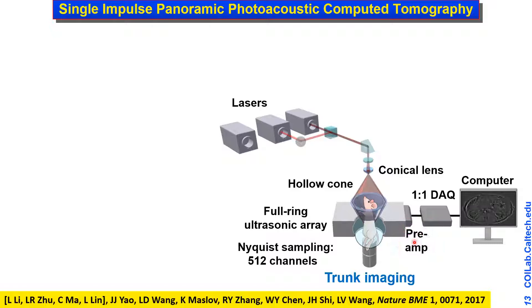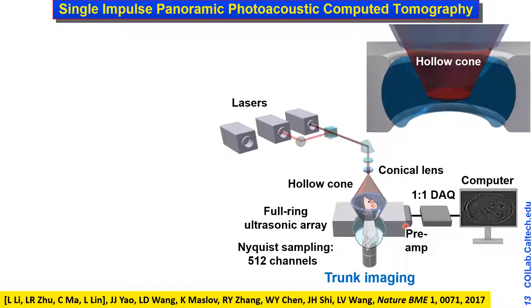As soon as sound is converted to electrical signals, we preamplify to minimize noise pickup and maximize SNR. With one-to-one data acquisition and a single laser shot, we acquire a 2D image within a few microseconds — one of the fastest imaging modalities available. The imaging acquisition time is limited by the acoustic transit time across the field of view. For brain imaging the system is reconfigured using a diffuser to generate a solid beam, which is the optimal illumination pattern.